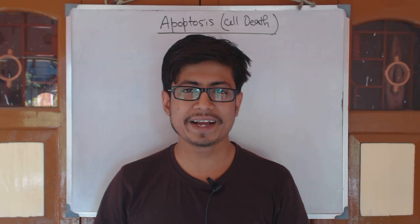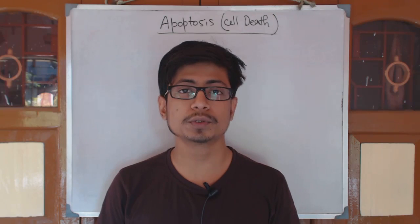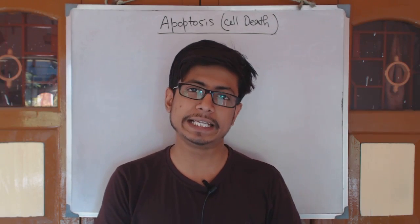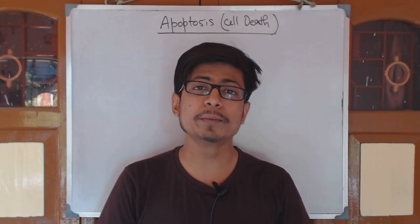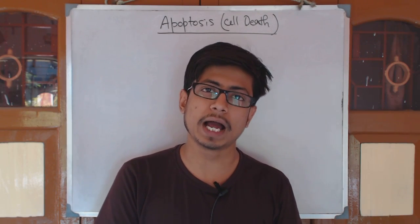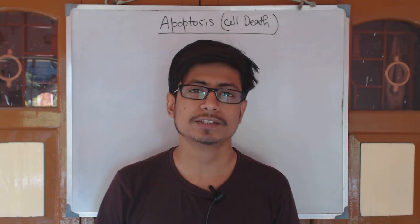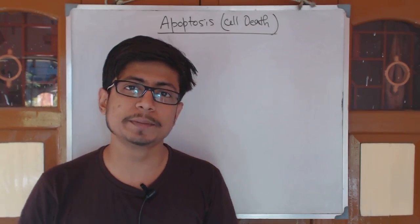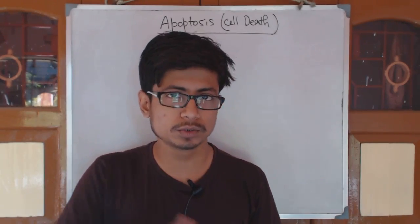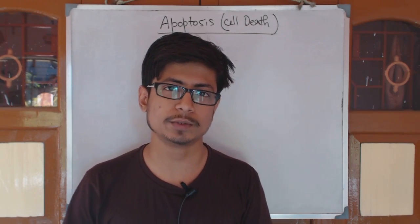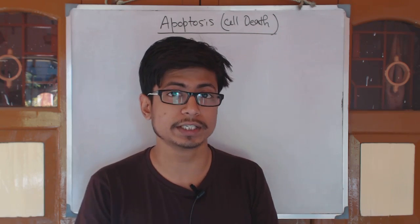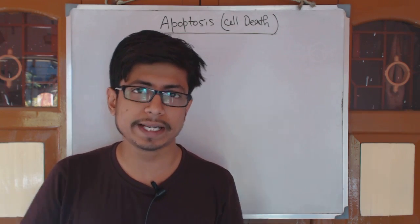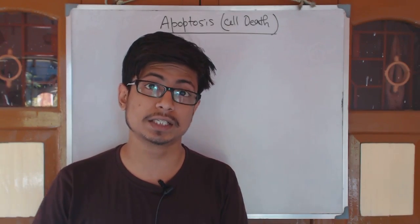Welcome to another video on apoptosis, or programmed cell death. What is apoptosis? Why do we require a cell to die naturally? Apoptosis is a process where a cell goes through itself to kill itself. So why would a cell try to kill itself? That is the first question you should have — why, in a natural way, would a cell try to kill itself?